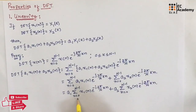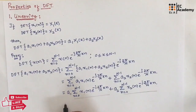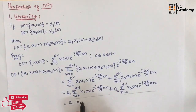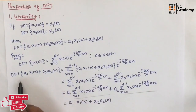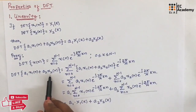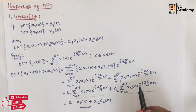If you consider this first summation, it is the DFT of x1(n). If you consider the second summation, it is the DFT of x2(n). So we can write A1·DFT of x1(n) as X1(k), plus A2·DFT of x2(n) as X2(k). Therefore, DFT of A1·x1(n) plus A2·x2(n) is equal to A1·X1(k) plus A2·X2(k). This is the linearity property. Hope you have understood the topic. Thank you.